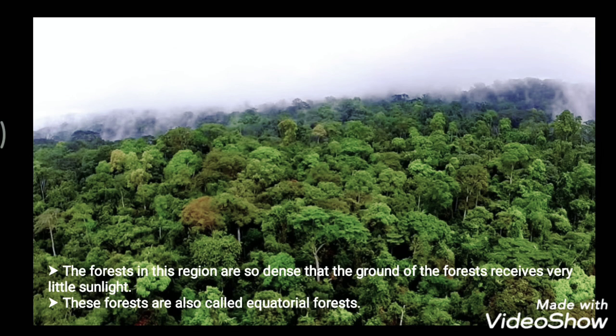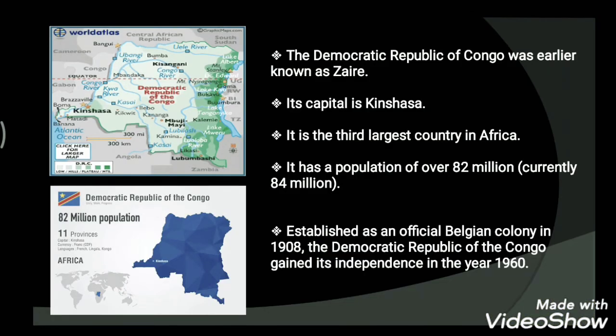The Democratic Republic of Congo was earlier known as Zaire, and its capital is Kinshasa. The DR of Congo is the third largest country in Africa.